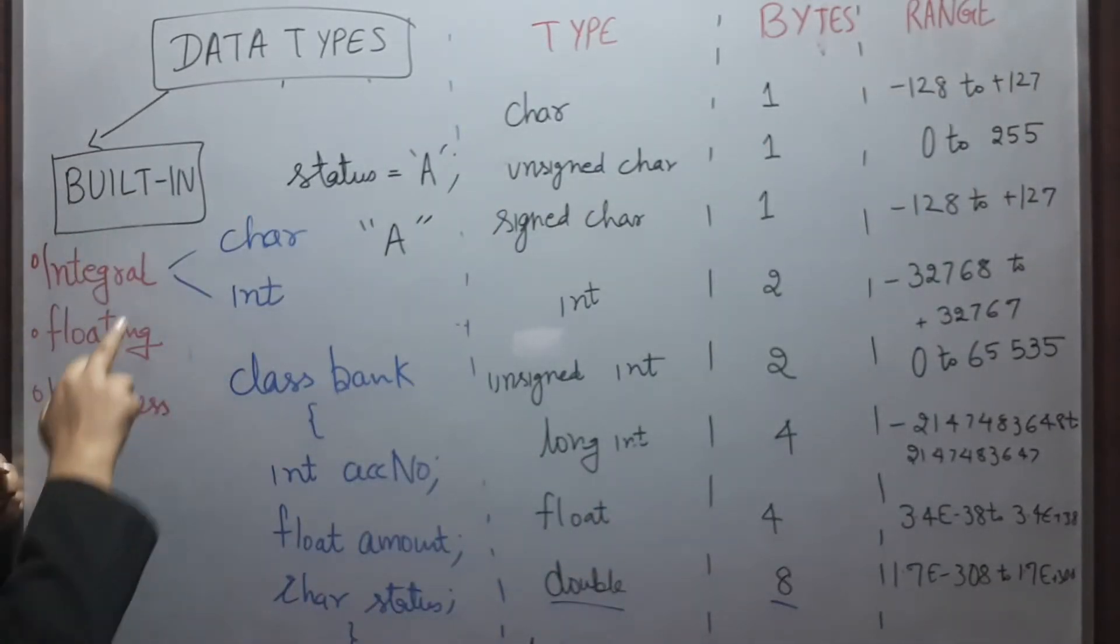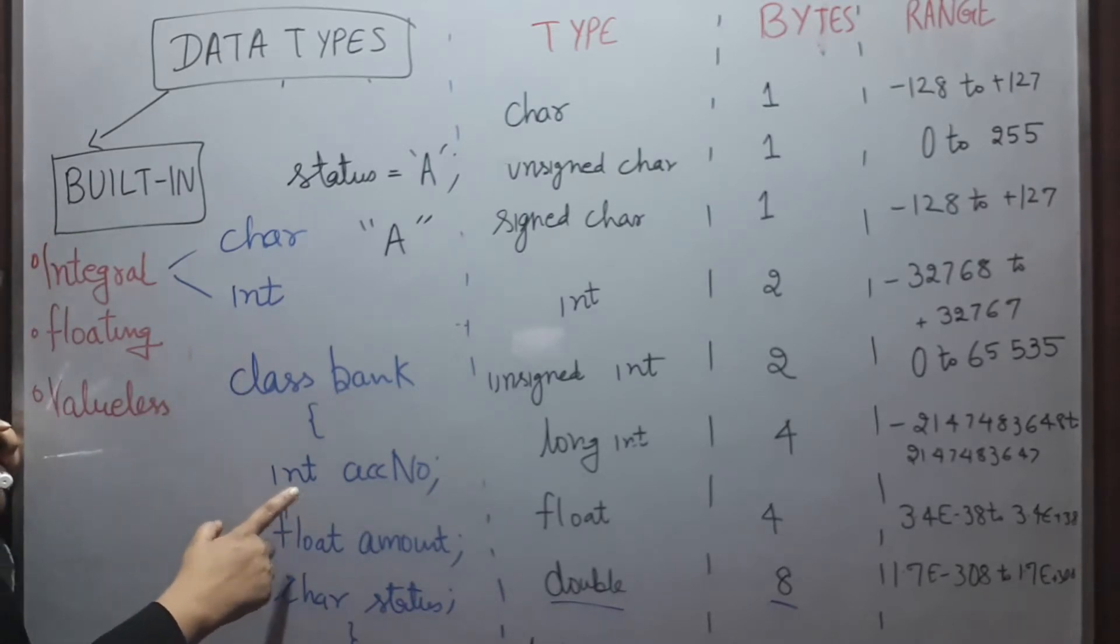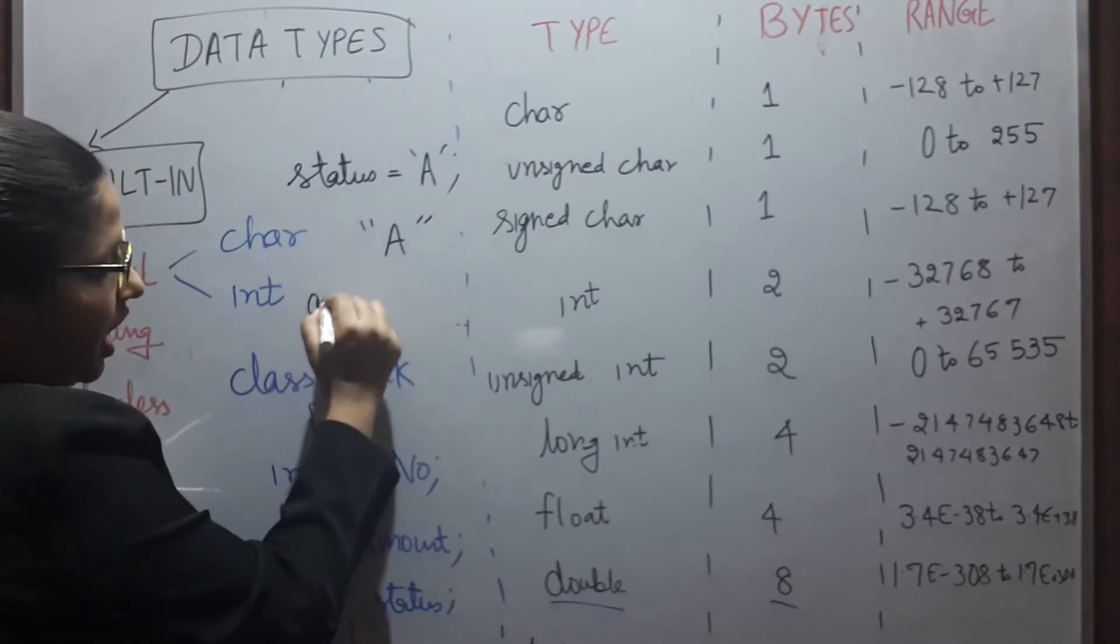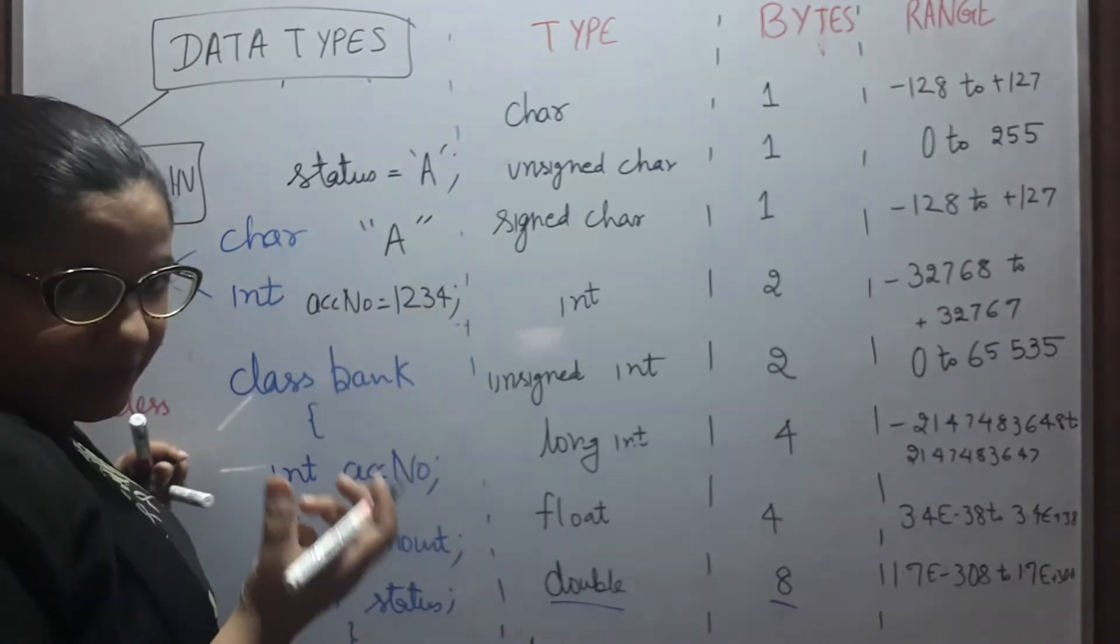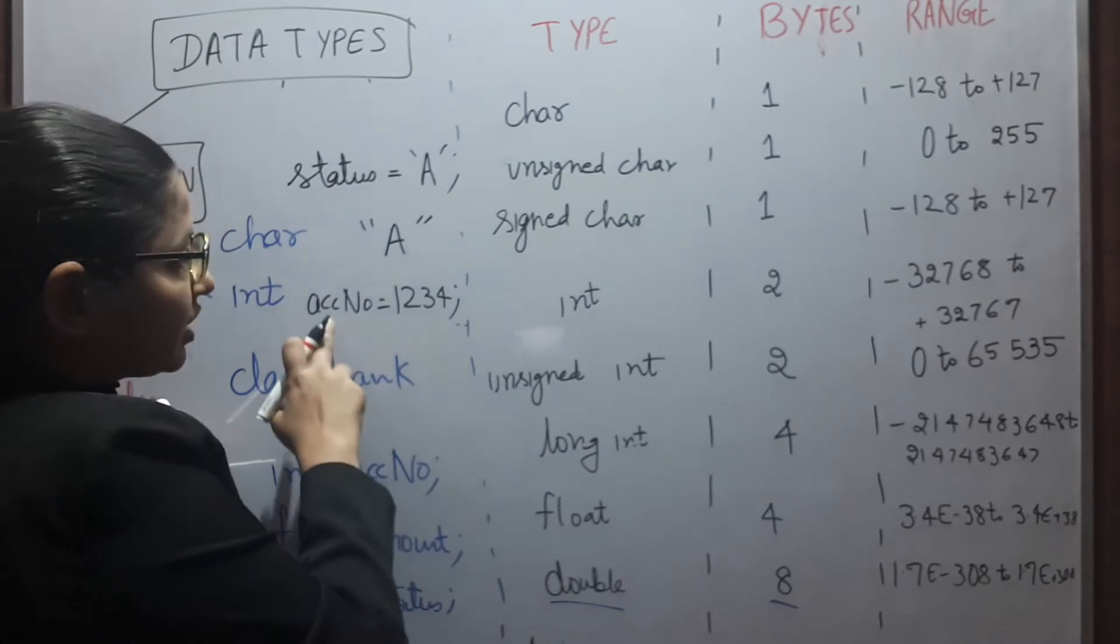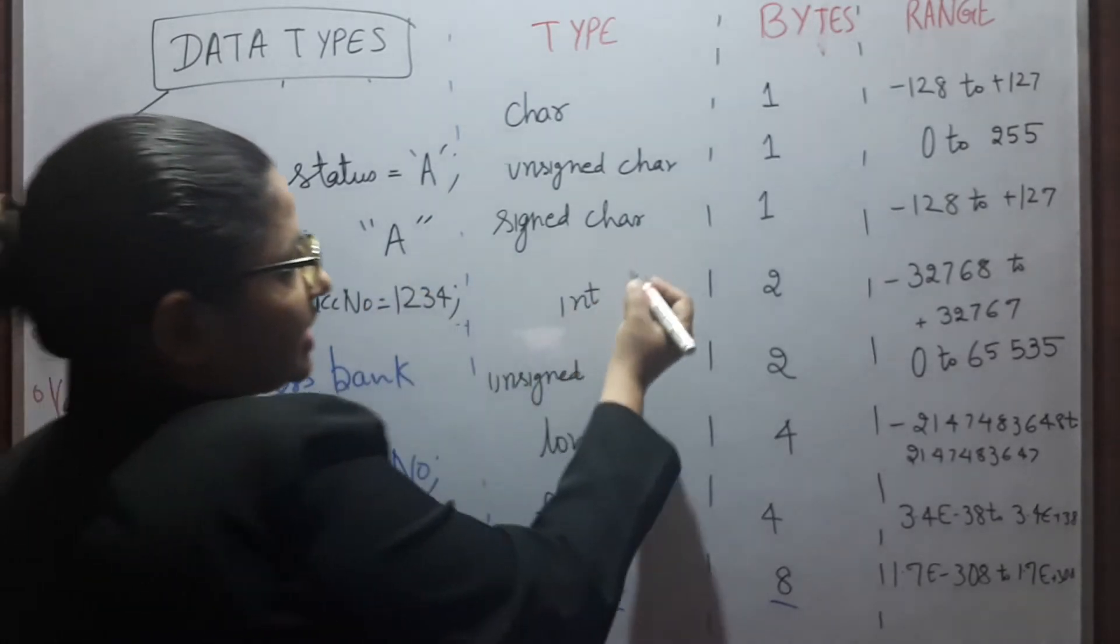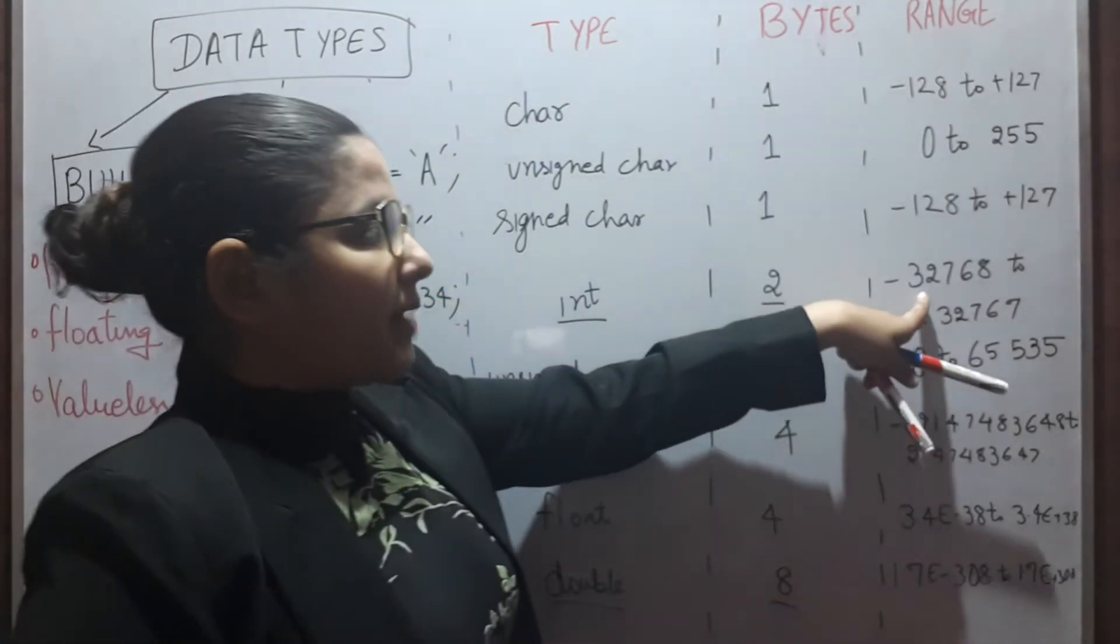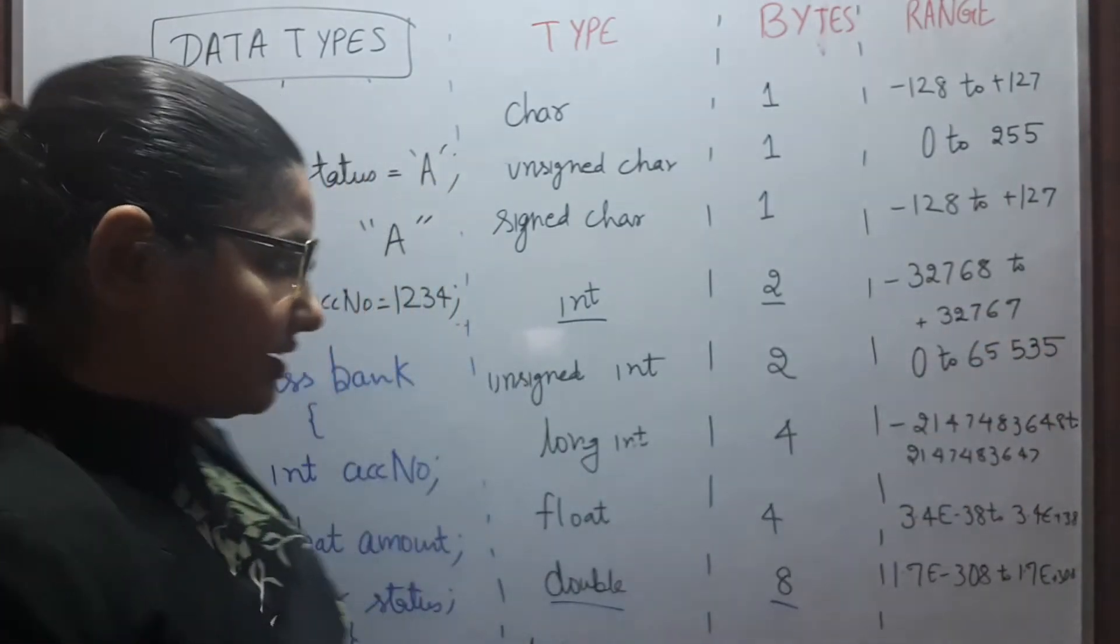Next, we are having int. Int basically stores integer values. For example, account number equals to 1234. We have to store integer, account number is always integer. Int integer takes two bytes of memory. That means, its range is minus 32768 to plus 32767.